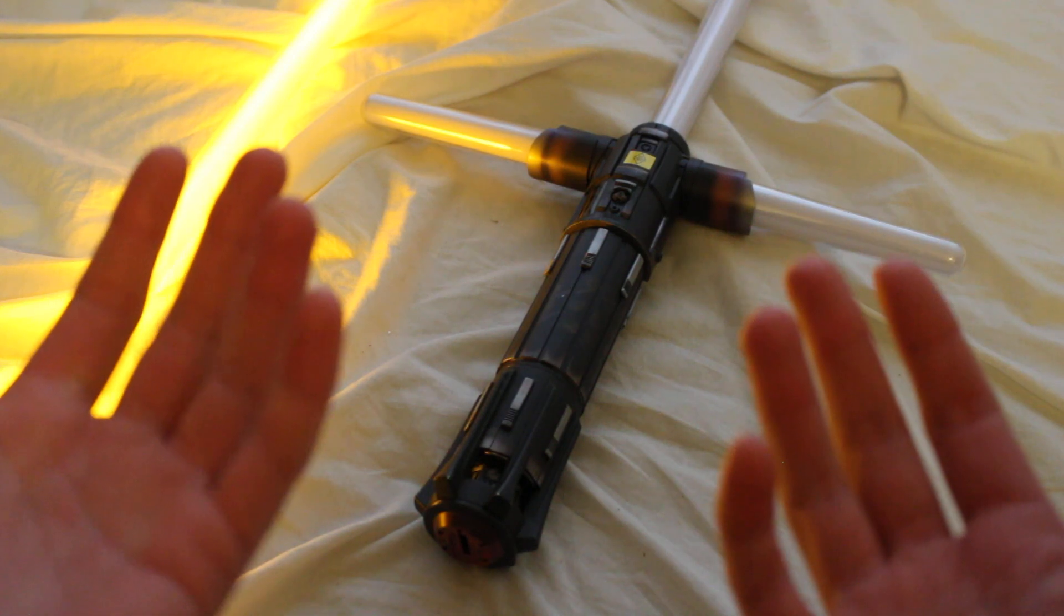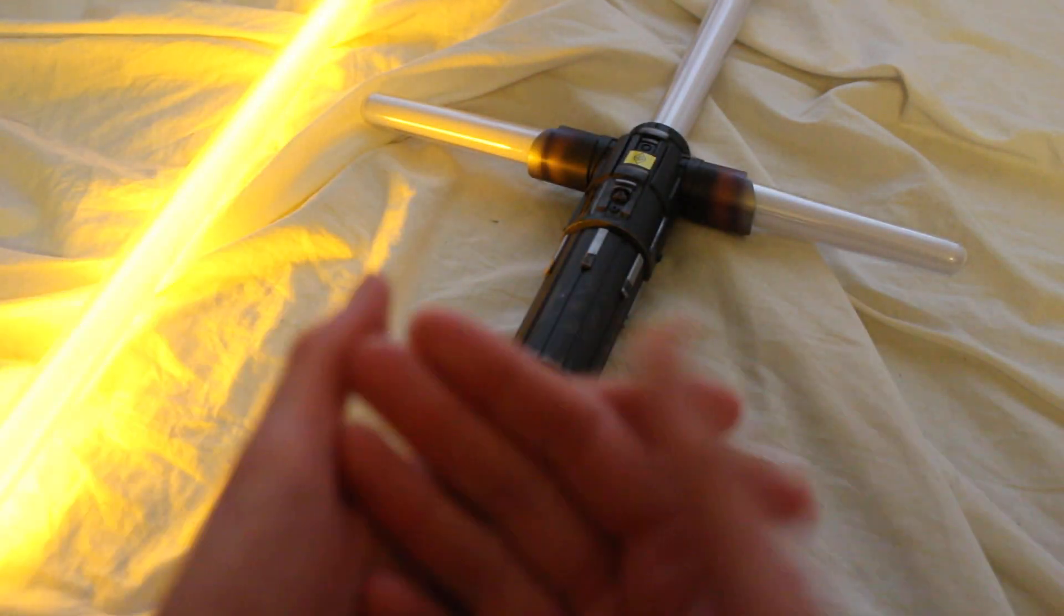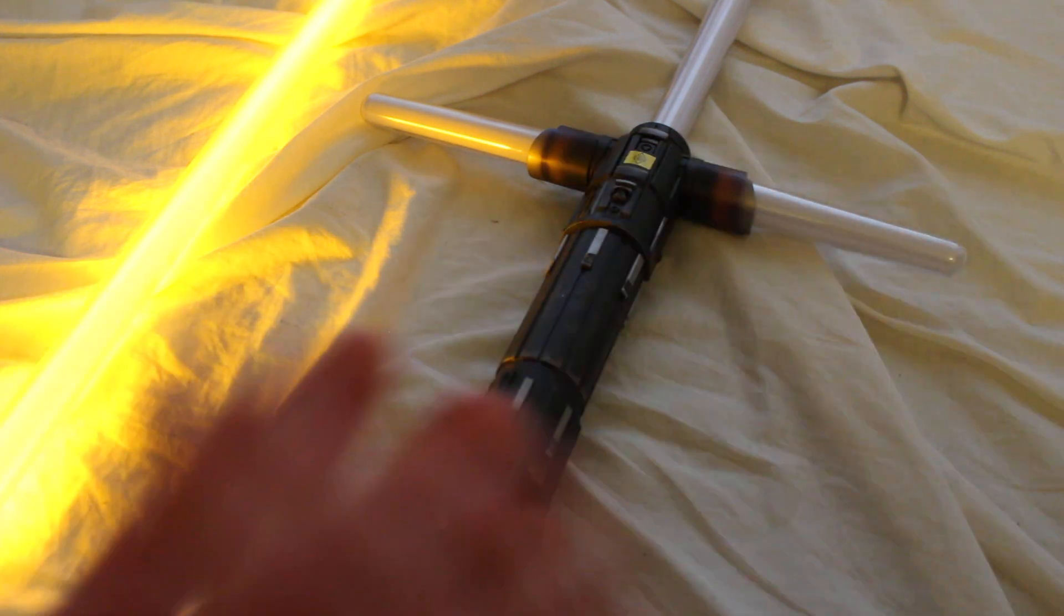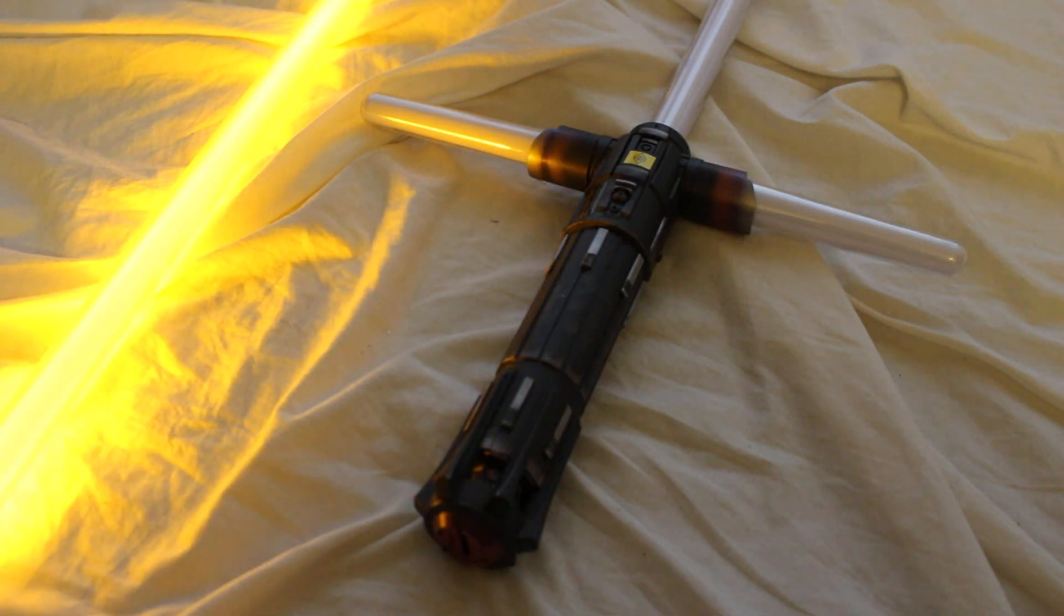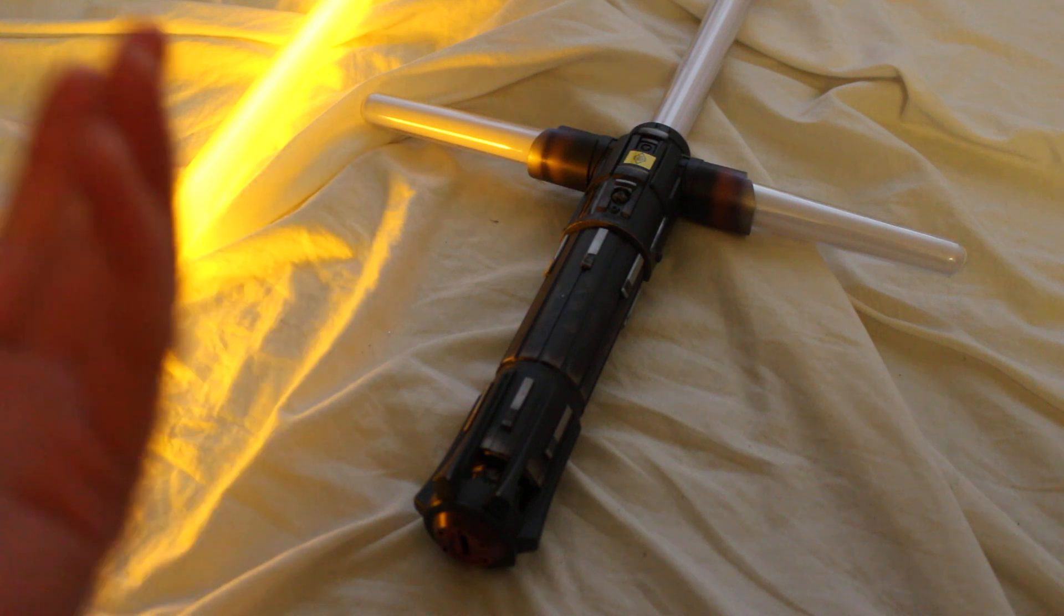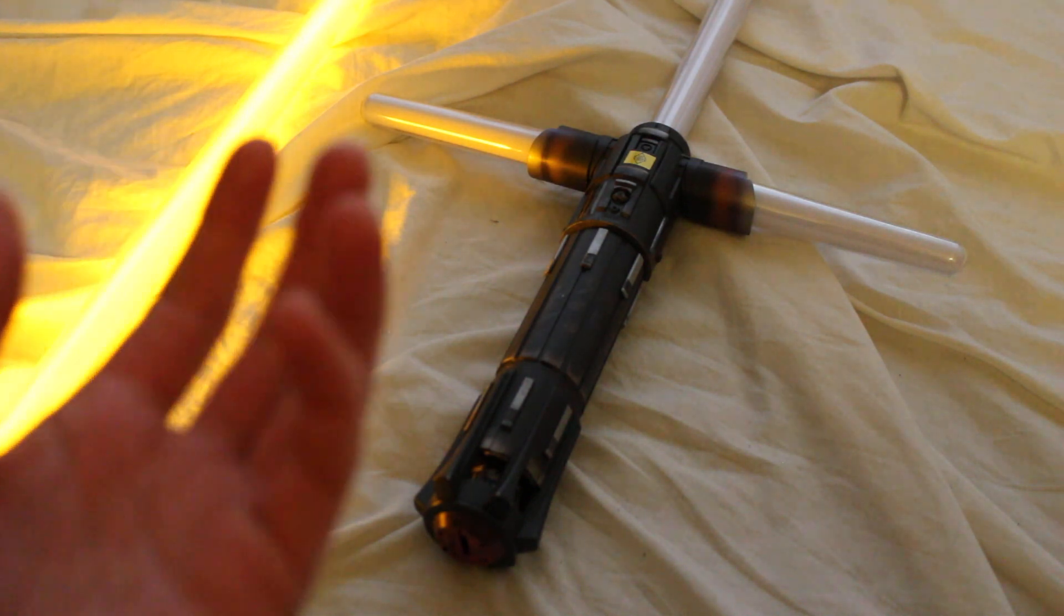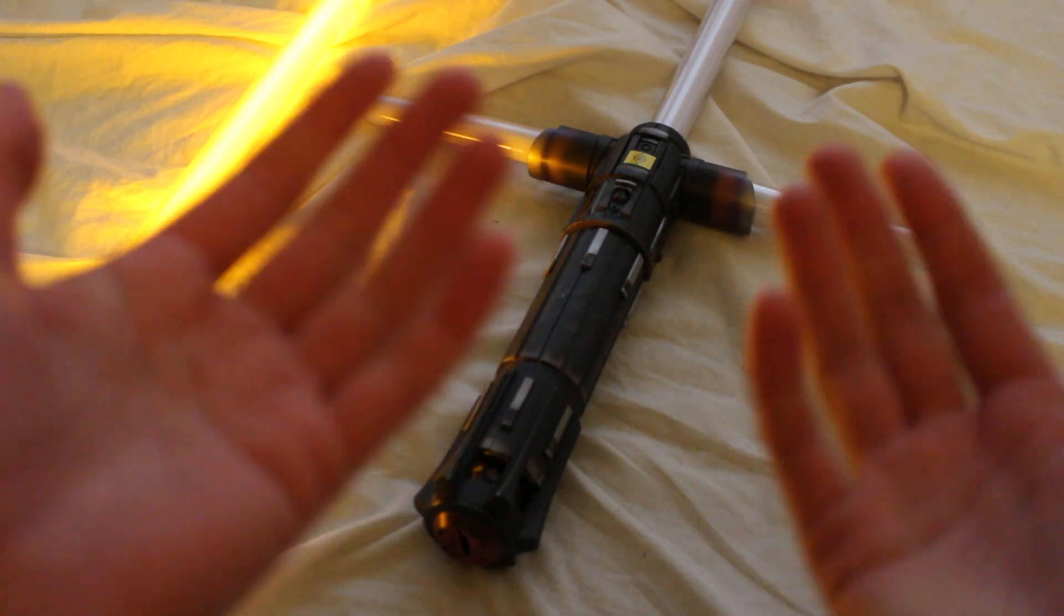And what happens to this lightsaber? So many things could have happened to it, but what happened is Kylo Ren, who has become Ben Solo again, he rejects the dark side and he just tosses this lightsaber as far as he can into the water. And it's presumably his rejection of the dark side of the force and his return to the light side, or at least symbolic of that occurring.